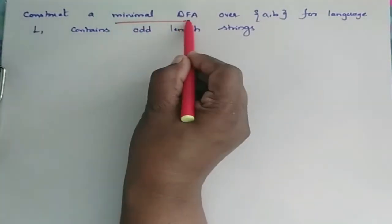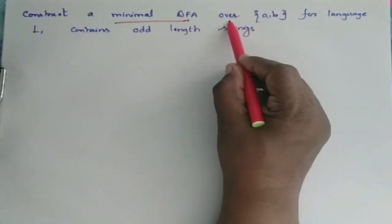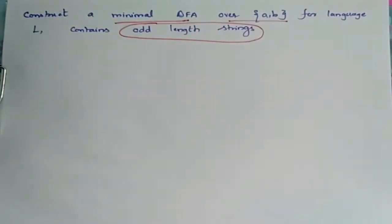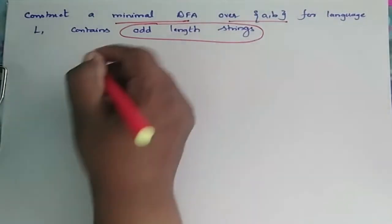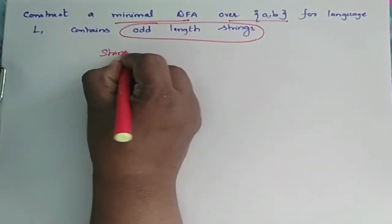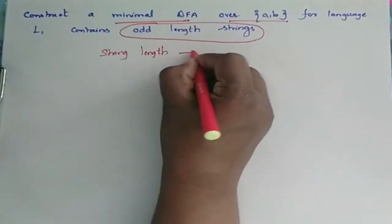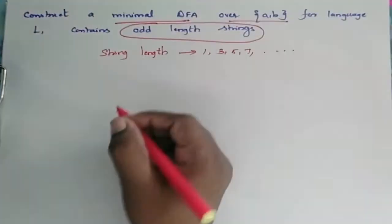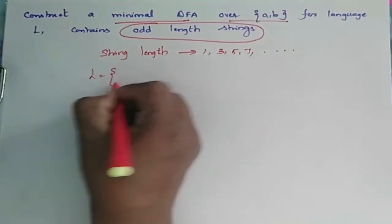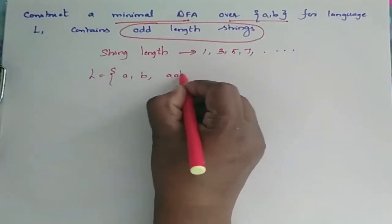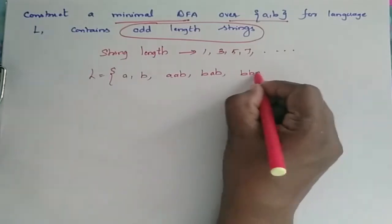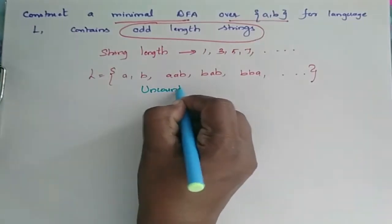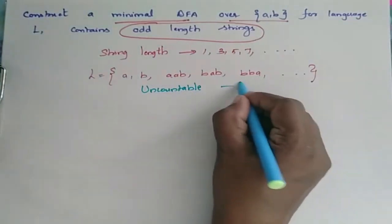Construct a minimal DFA for language L which contains odd length strings. The string lengths are 1, 3, 5, 7, etc. So the language contains strings such as A, B, AA, AB, BB, BBA, and so on. It is an infinite language.